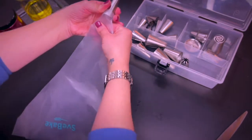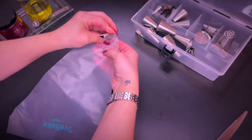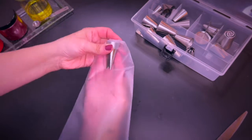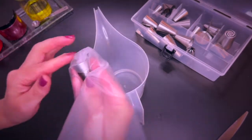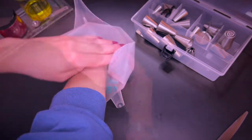Twist it and turn it towards my hand, just like so, and then go ahead and place it in a pitcher. So once I'm ready to fill the bag, the batter doesn't drip.